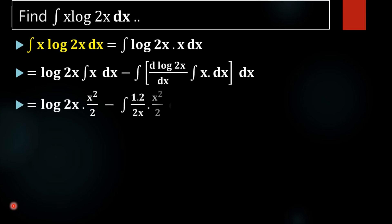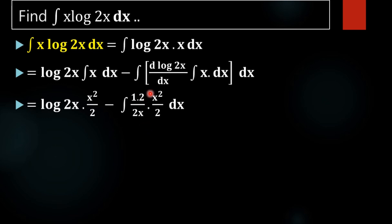The integral of x is x²/2. Now we need the derivative of log(2x). The derivative of log is 1 over that function, here 2x, so it is 1/2x. Next, the derivative of 2x is 2 — that is, derivative of x is 1, then 2 into 1 gives 2.